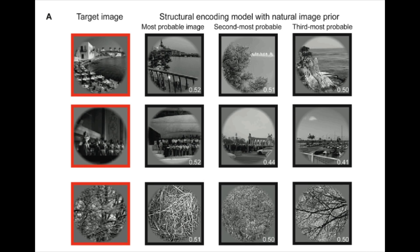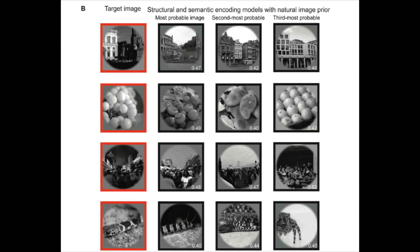Check out these images. On the left are the target images, what the subject was actually seeing. The images to their right are the most probable matches as deduced from their brain scans.